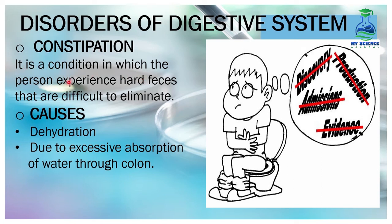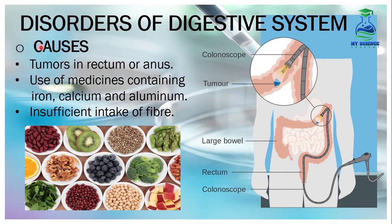What is constipation? It is a condition in which the person experiences hard feces that are difficult to eliminate. The feces become so hard that the person has great difficulty passing them. Causes of constipation: Number 1, dehydration — excessive loss of water from the body with very low intake. Number 2, due to excessive absorption of water through the colon into the blood, more than normal.